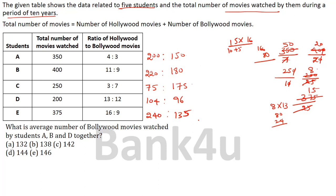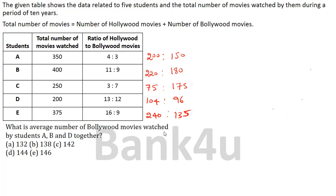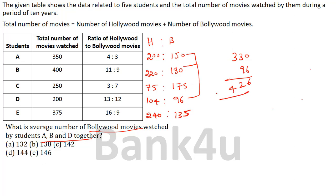Now we solve the questions based on these ratios. The first question: what is the average number of Bollywood movies watched by students A, B and D together? Bollywood values are: A = 150, B = 180, D = 96. So 150 plus 180 equals 330, and 330 plus 96 equals 426. Average = 426 divided by 3 = 142. The answer is option C.